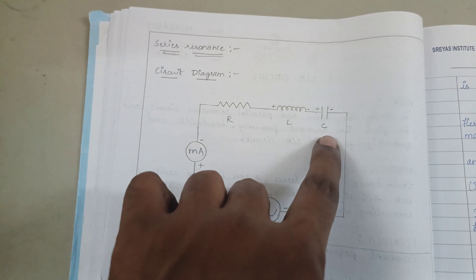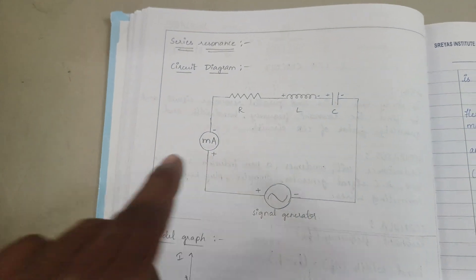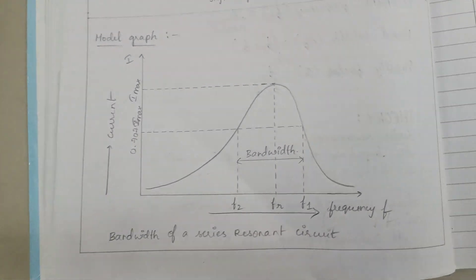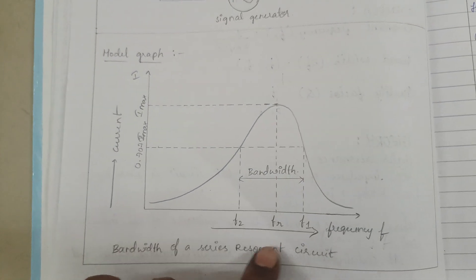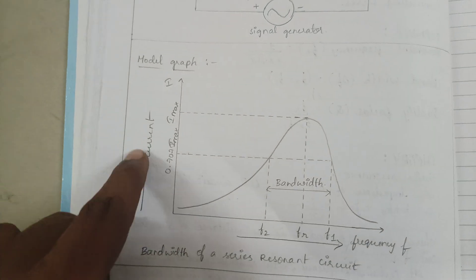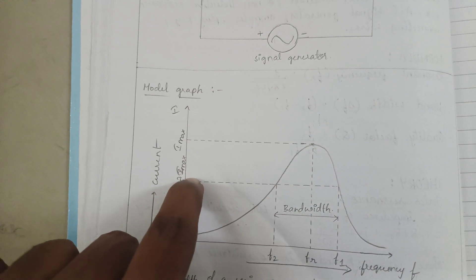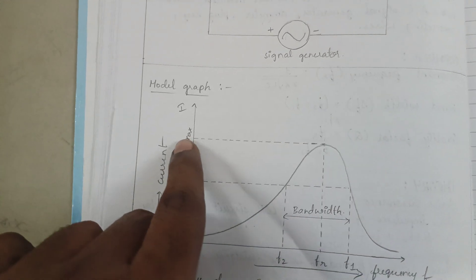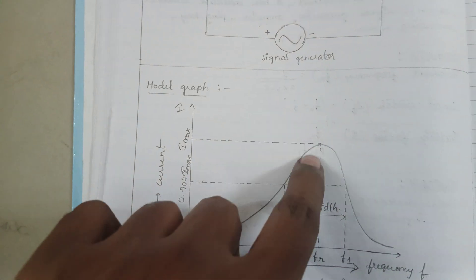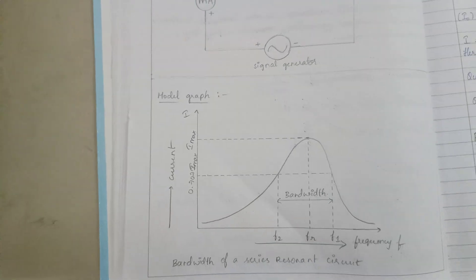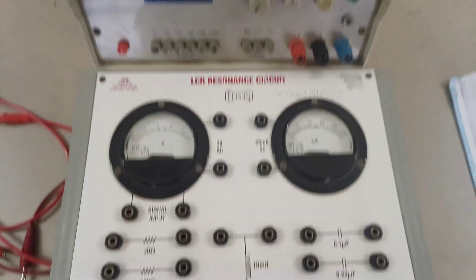This is the model graph we have to make. Take frequency on the x-axis and current on the y-axis. This is the bandwidth, this is the maximum current, and this is the resonant frequency.